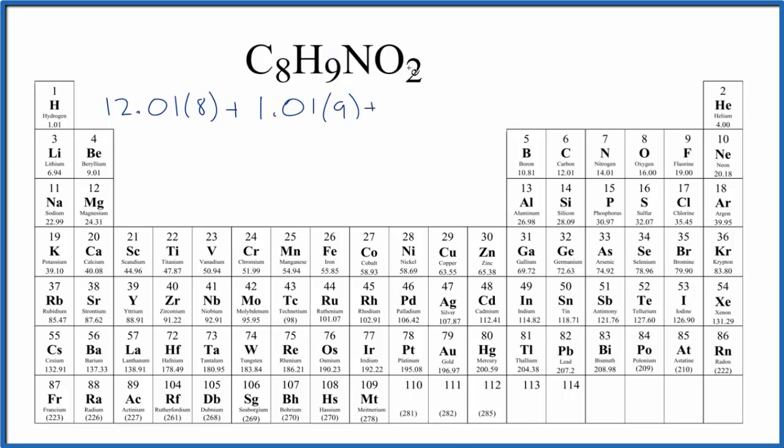Nitrogen, we have just the 1 nitrogen, and nitrogen is 14.01 grams per mole. So we'll multiply that by 1. And then oxygen, 16.00 grams per mole. And we have the 2 oxygen atoms.